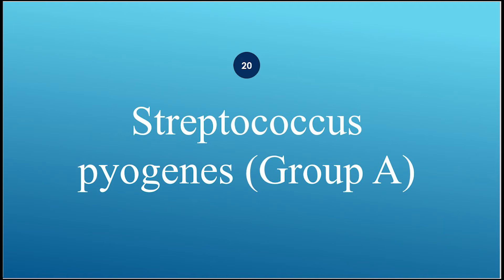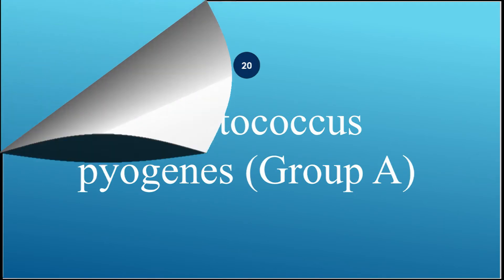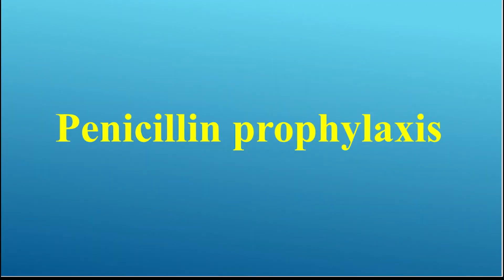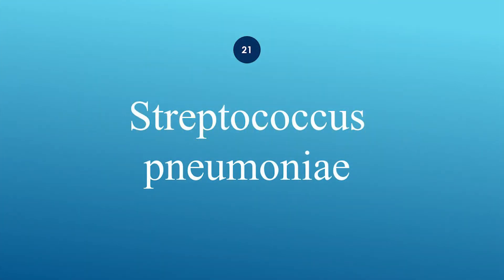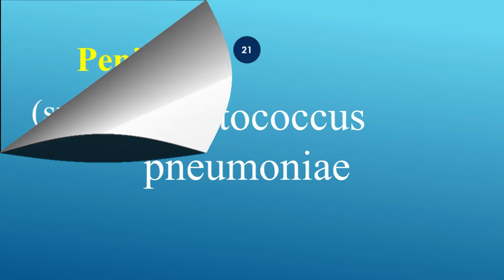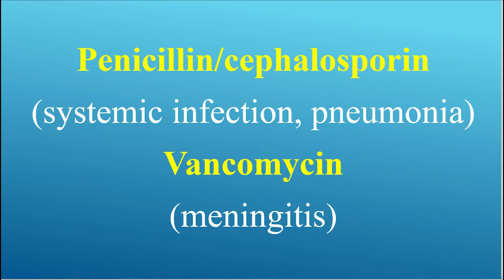What is the Streptococcus pyogenes treatment? Use penicillin for prophylaxis. What are the treatments of Streptococcus pneumoniae? For systemic infection and pneumonia, use penicillin or cephalosporin. For meningitis, use vancomycin.